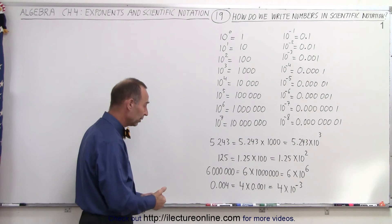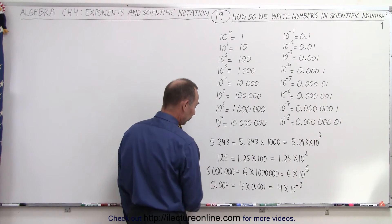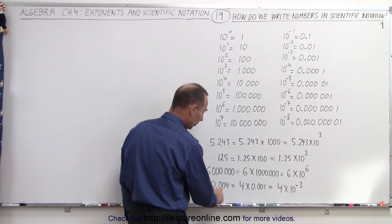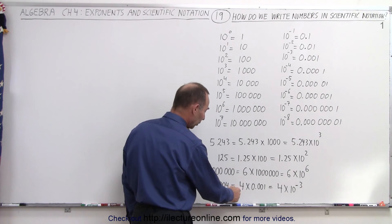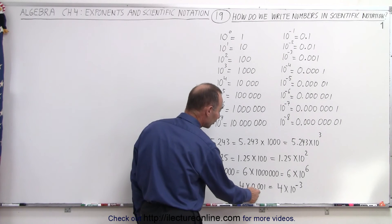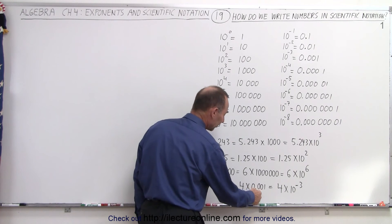What if I have a small number less than 1? For example, 0.004. Notice if I move the decimal place over three places, I now have the number 4. So I could write the number 4 times 0.001.